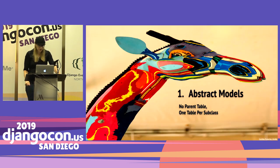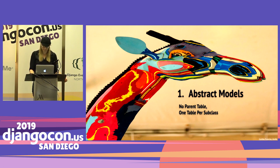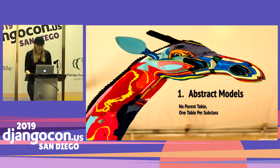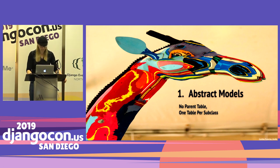Up first is abstract models. The point of abstract models is to reuse the parent class's fields and field-related functionality. As the name suggests, the parent is abstract and not backed by a table in the database. Therefore, each derived class will have all of the fields from the parent and itself on its own table.